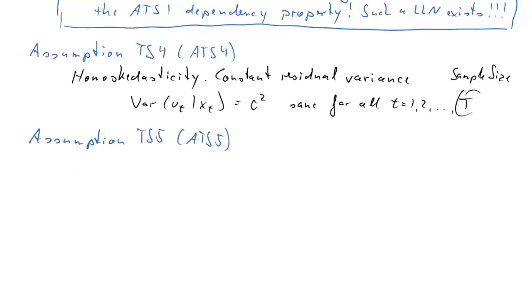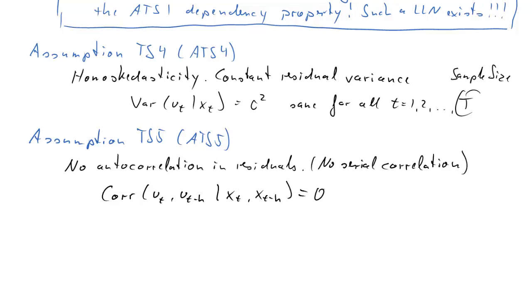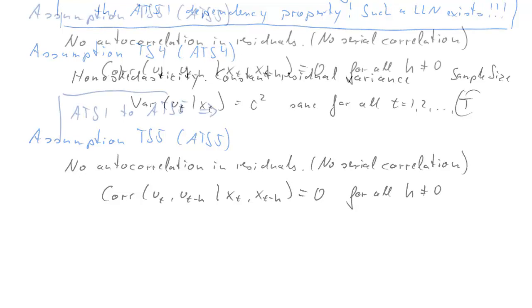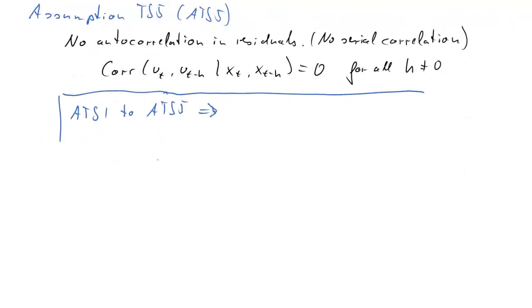The fifth assumption is new. So that's the assumption that there is no autocorrelation between error terms at different times. We also call that no serial correlation assumption. Formally, we want the correlation between UT and UT minus H, so the residual error term at another period conditional on the X's at these periods to be 0. And that is for all lags H equal to 0. Now, if assumptions, time series assumptions 1 to time series assumption 5 are met, then we can establish that beta hat OLS is asymptotically efficient.